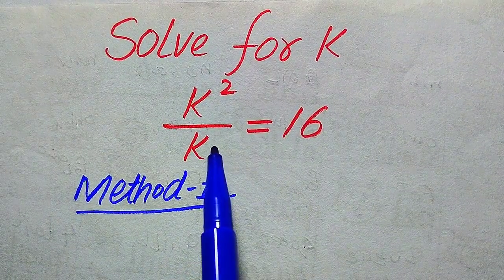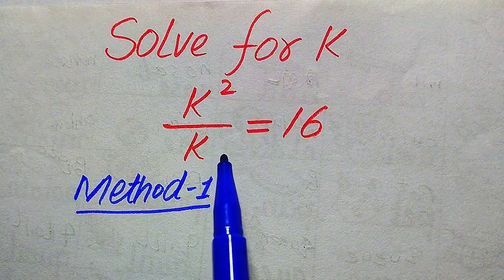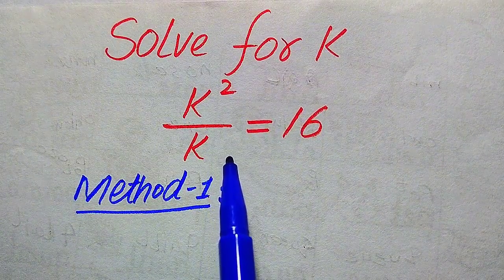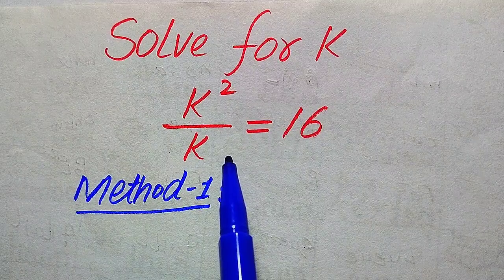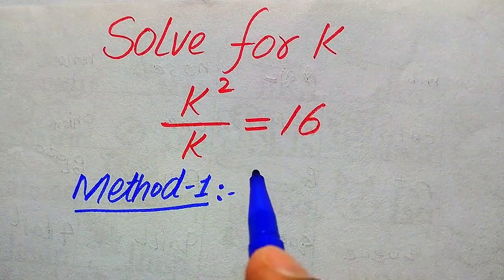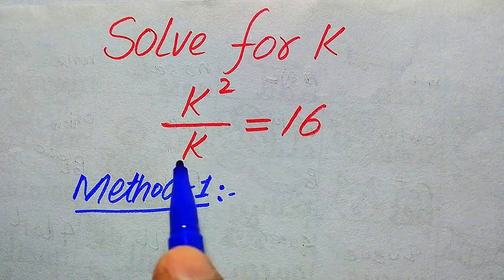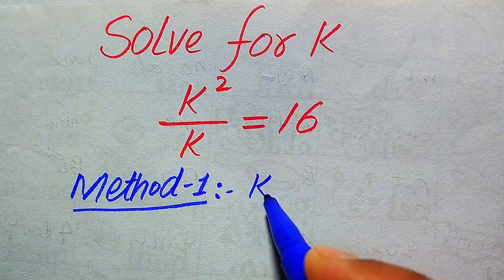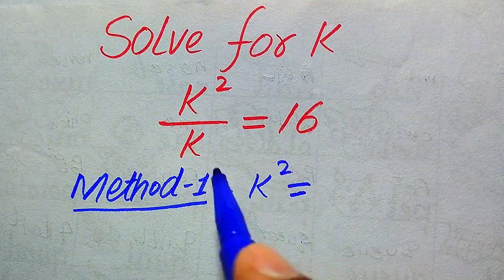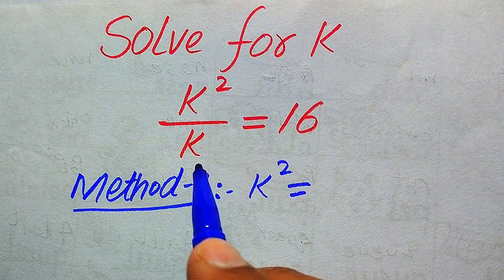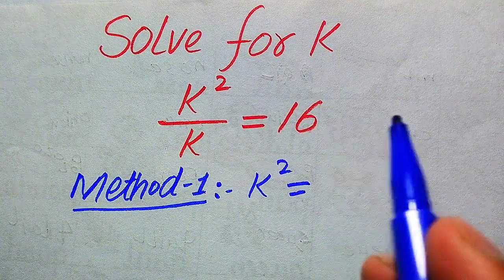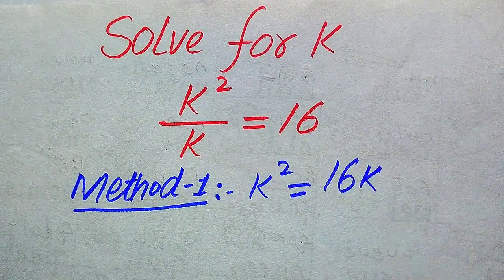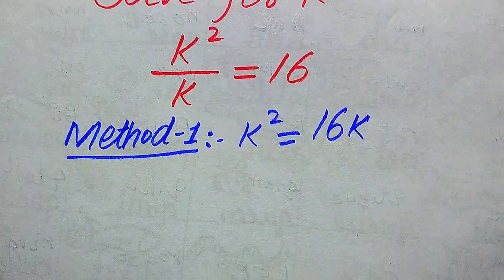The highest degree of this equation is 2, which means that this equation has 2 or fewer roots. To find all the roots, we move k from the left-hand side to the right-hand side. So k squared divided by k becomes k squared equals 16 times k.